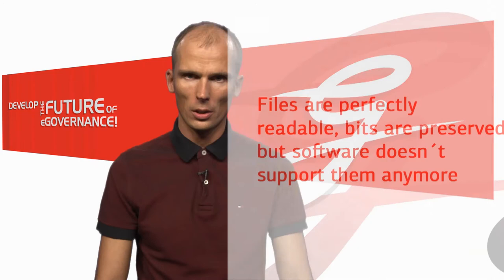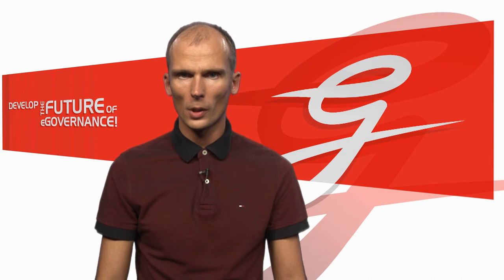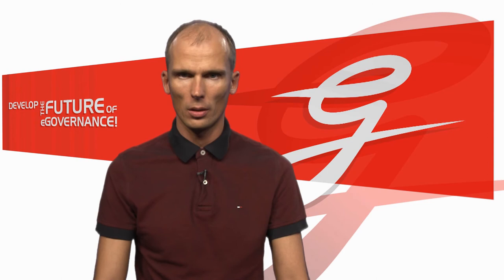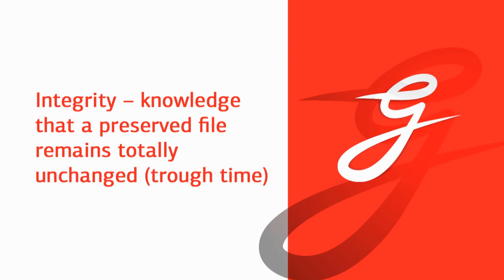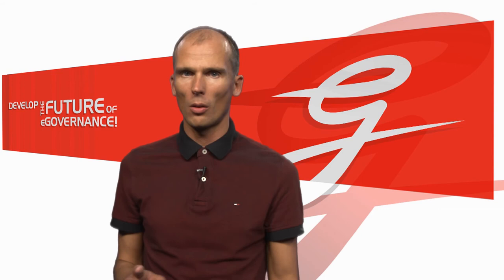The fourth technical risk is the loss of authenticity or integrity. Authenticity means the knowledge that the information we have was created by the person we think created it. Integrity is the knowledge that the file has been preserved perfectly unchanged through time. Both of these properties can easily be lost if we don't take proper care of our files — just storing them on a hard disk or on tapes doesn't solve it.